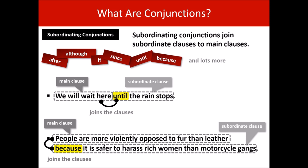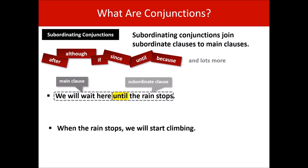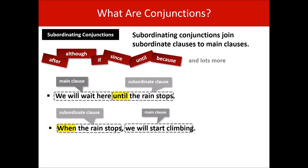There's one more thing about subordinating conjunctions: they don't always follow the main clause. Sometimes they're in front of it. When the rain stops, we will start climbing — 'when' is our subordinating conjunction sitting inside the subordinate clause and linking it to the main clause. Usually, when a sentence starts with a subordinate clause, it is normal to put a comma after the subordinate clause to show where the main clause starts.